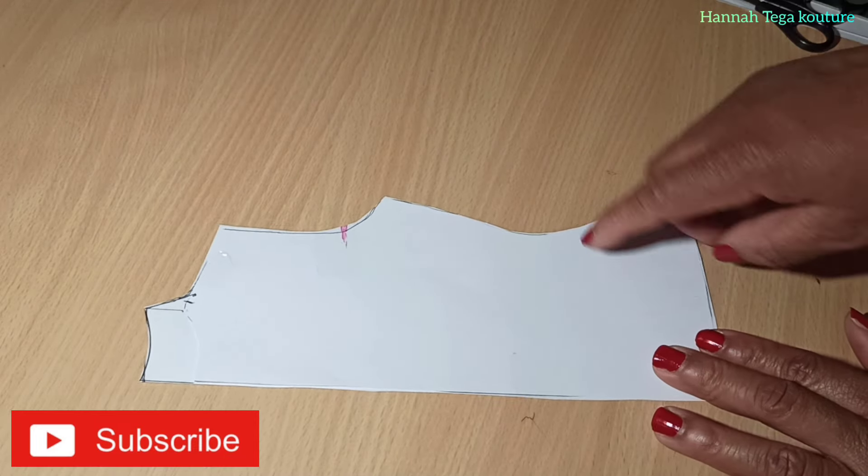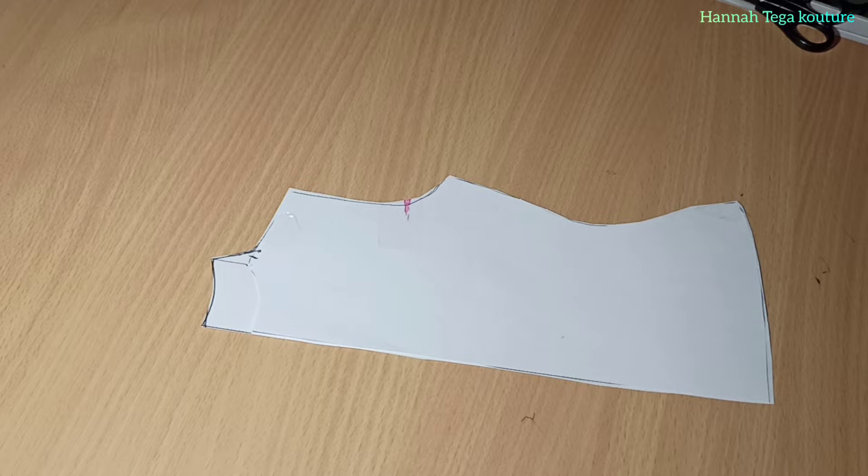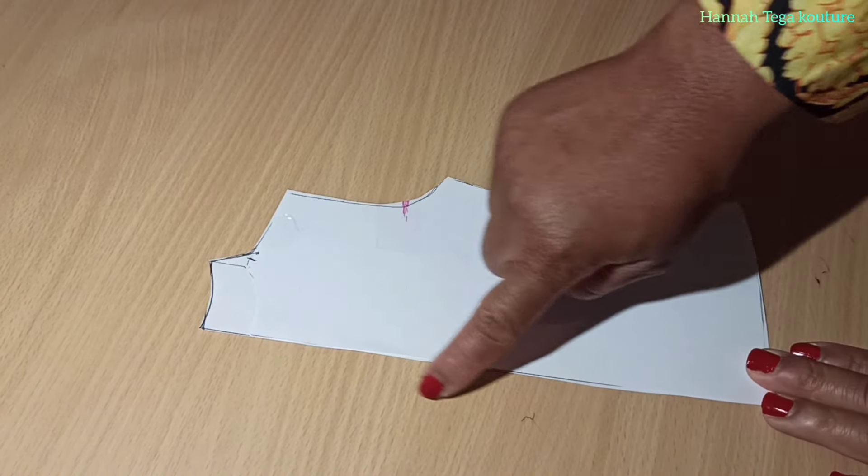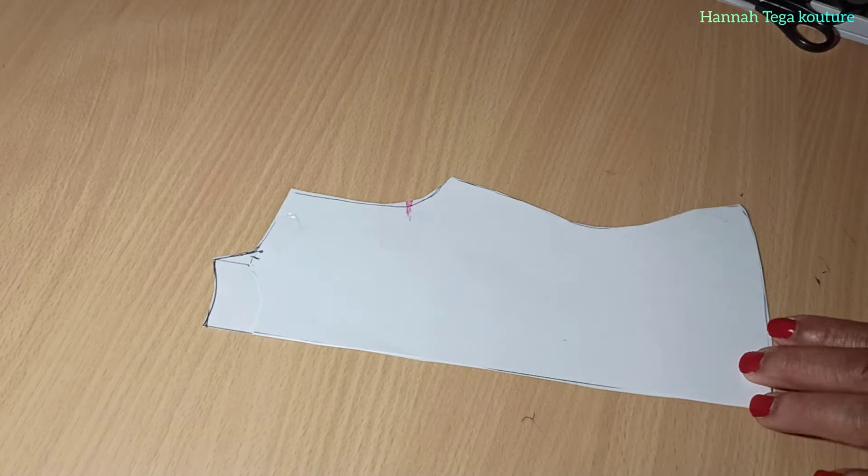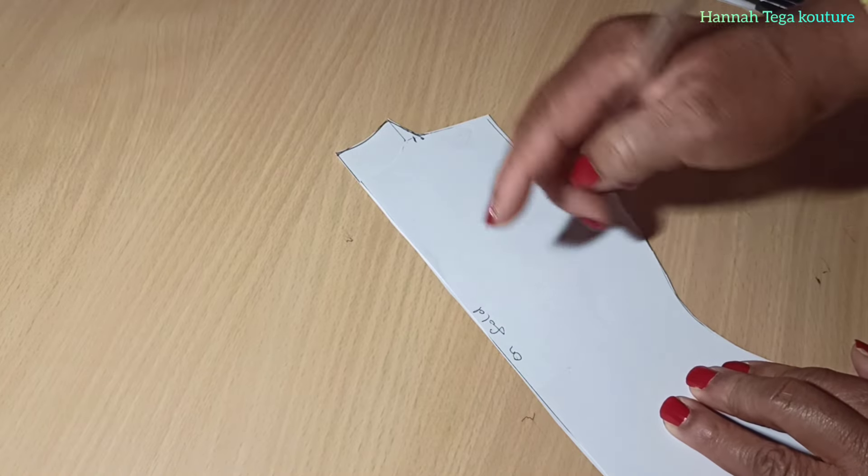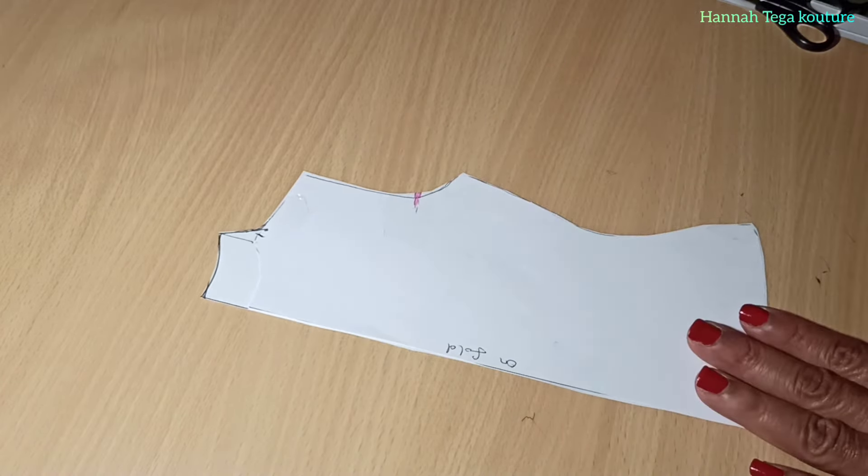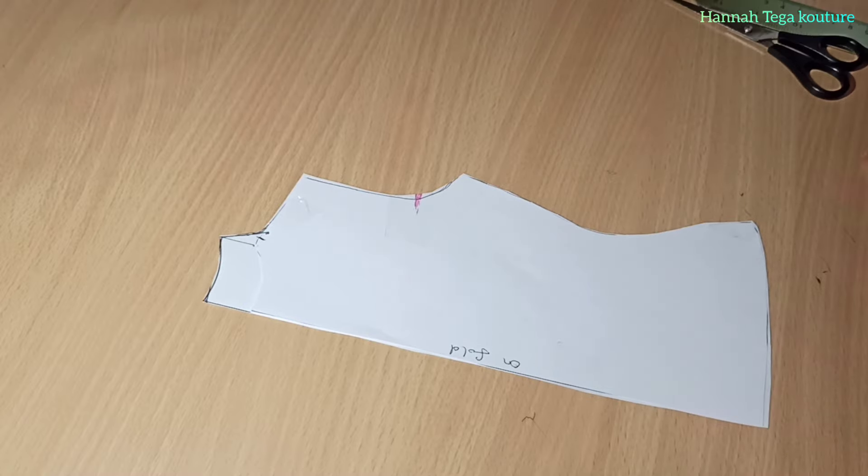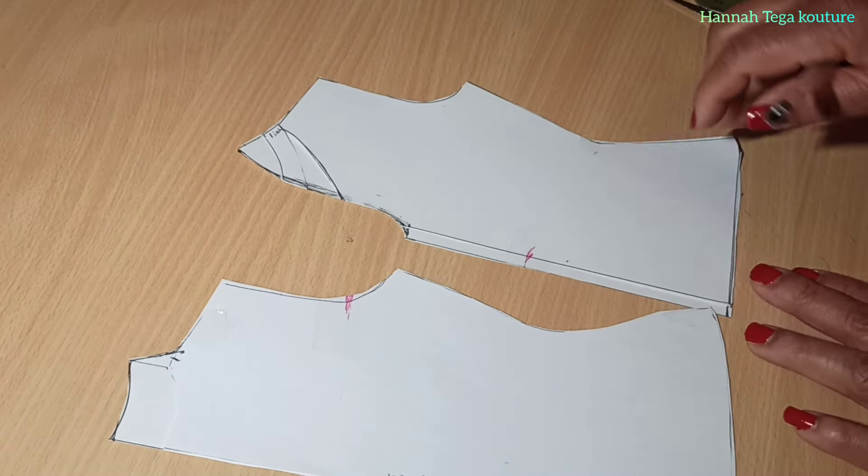The back panel has no cut, so it will be a matter of placing it unfold on a fabric unfold so the neckline can be all round with no cut. For the front panel, you'll be adding zipper or buttons.